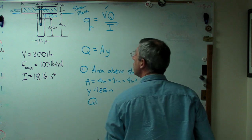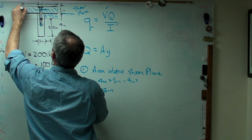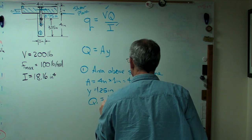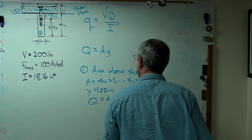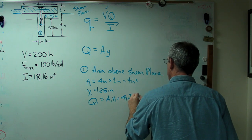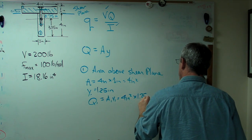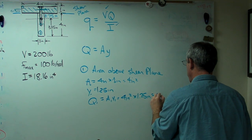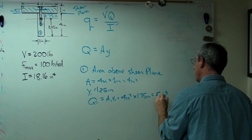So Q, and I'll call this Q1 maybe. Let's number this box 1 and that box 2. Q1 is A1Y1. 4 square inches times 1.25 inches. And 5 fourths times 4 is just 5 inches cubed. That's got the units of volume, but it's not a volume. It's an area times a distance.